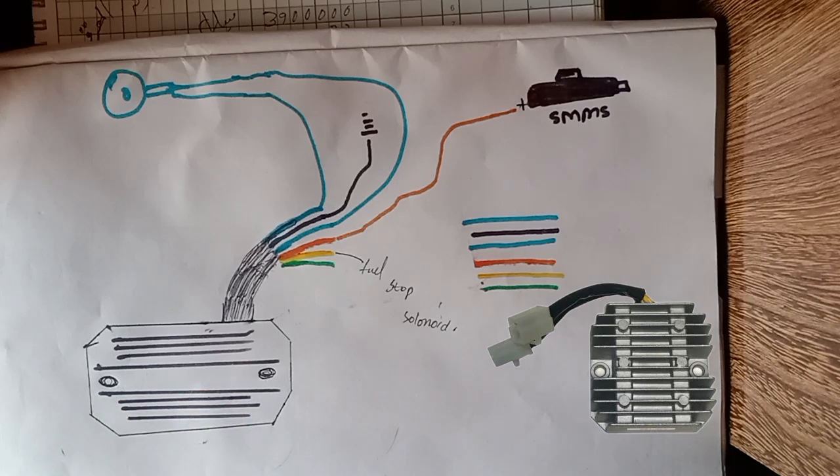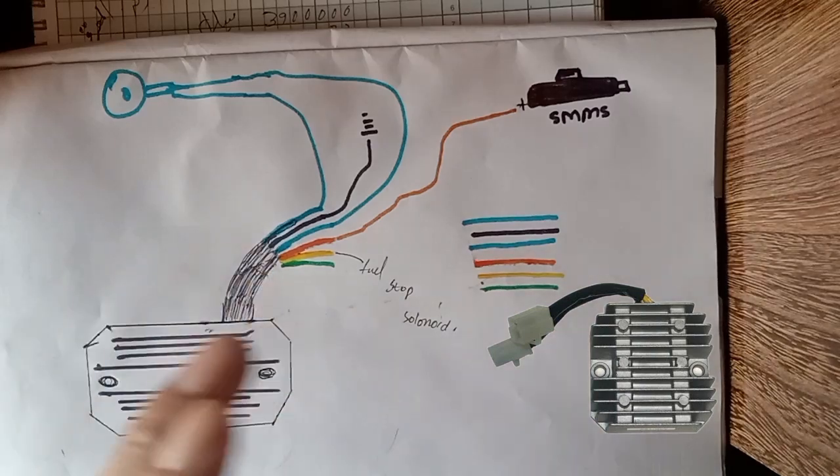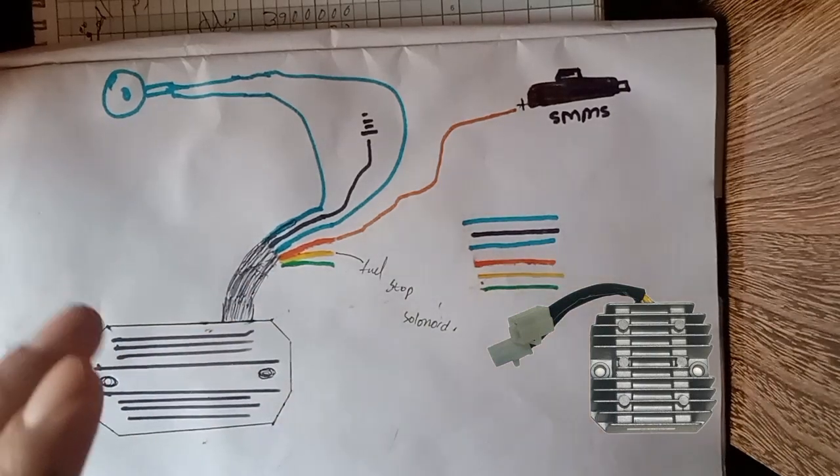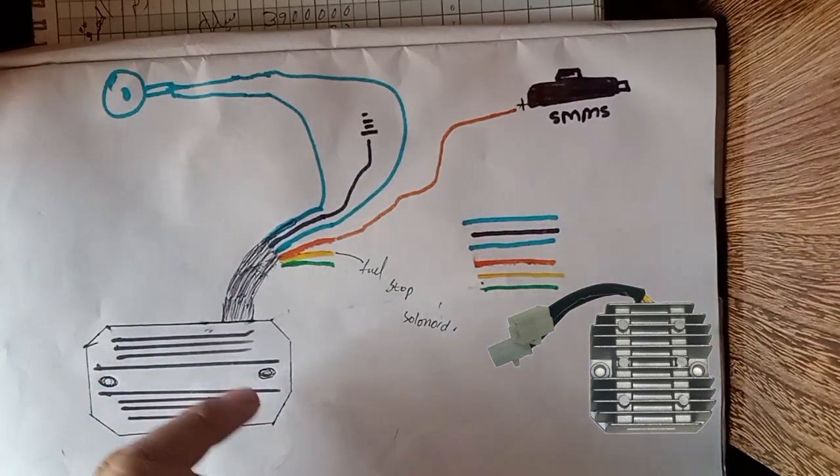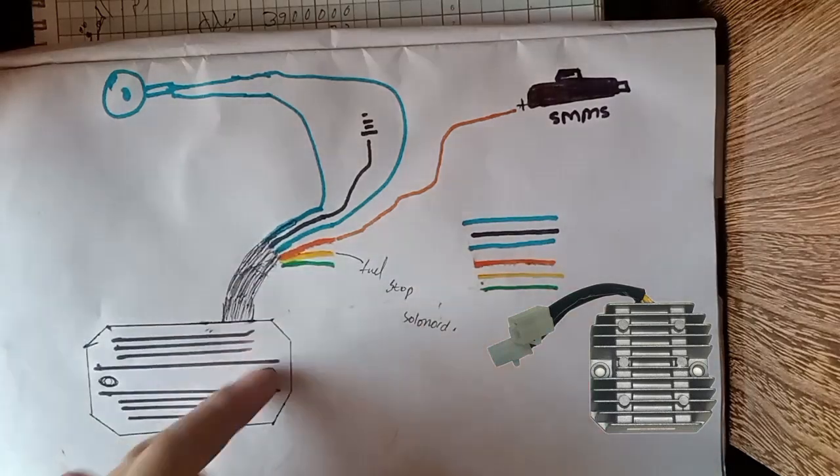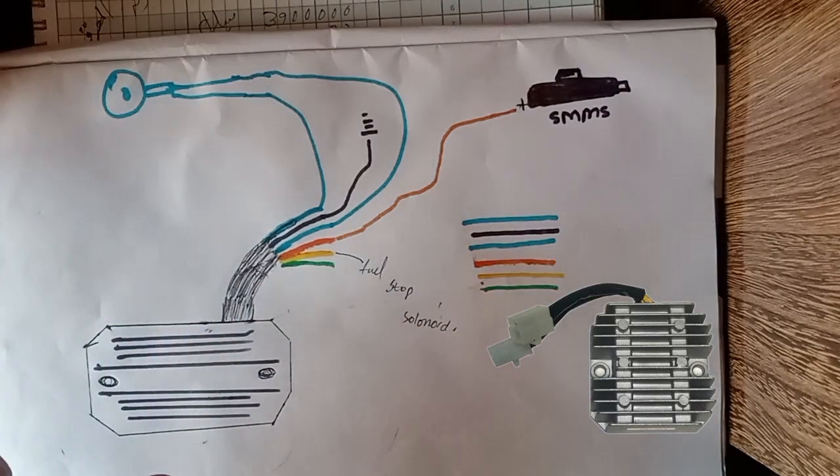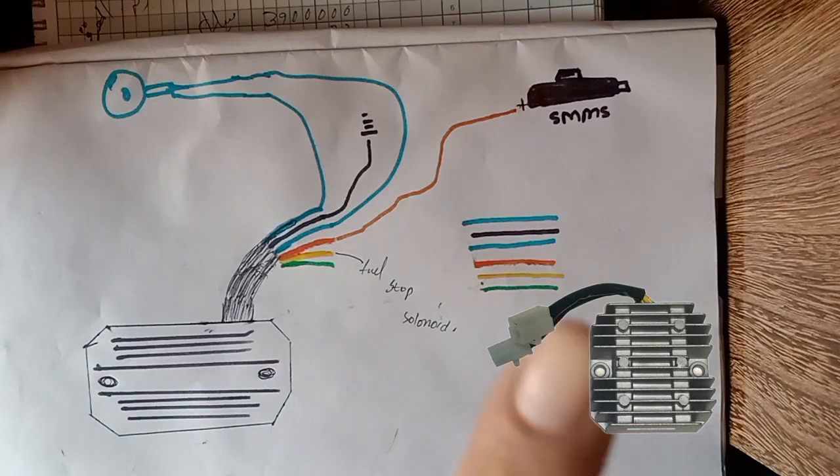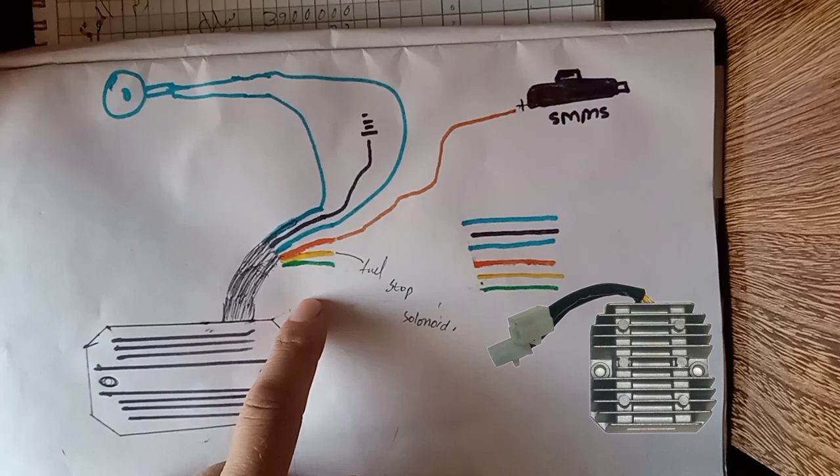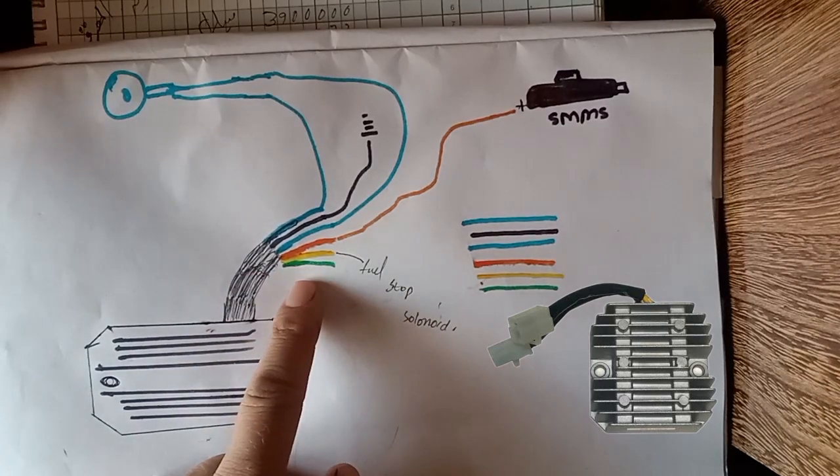The alternator does not have a bridge rectifier behind it. It only generates AC current and sends it to a separate rectifier module, as you can see on screen. This rectifier comes in different configurations with three wires, four wires, or six wires.